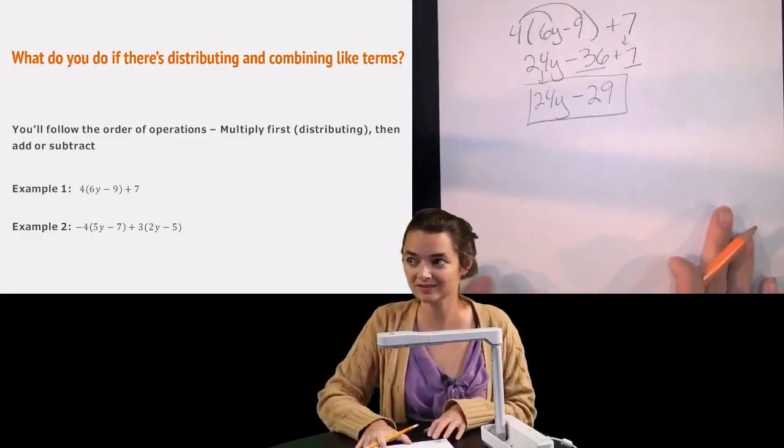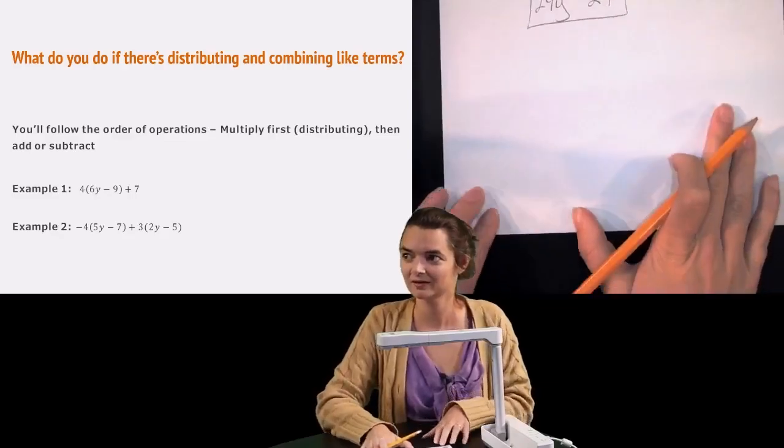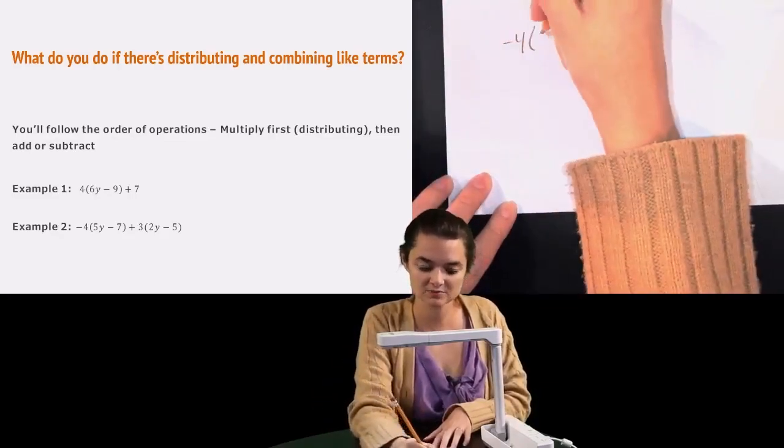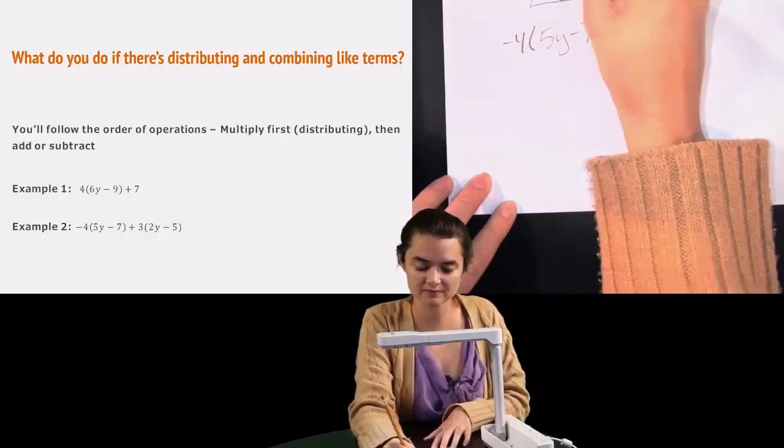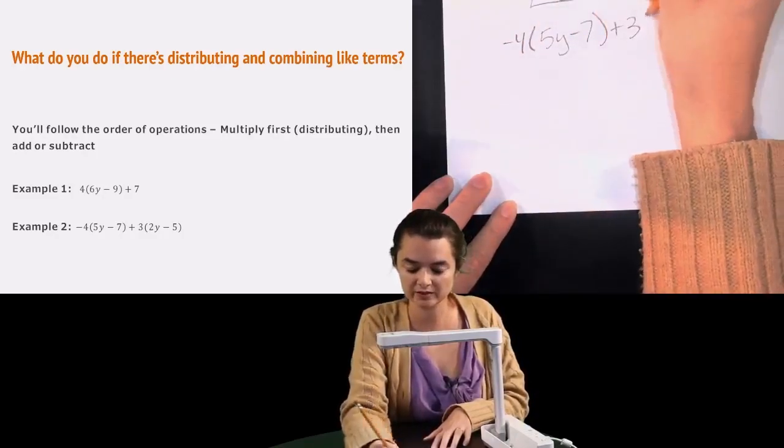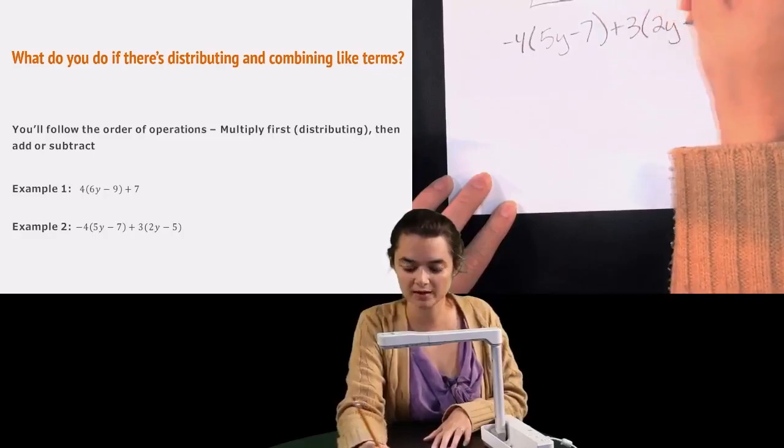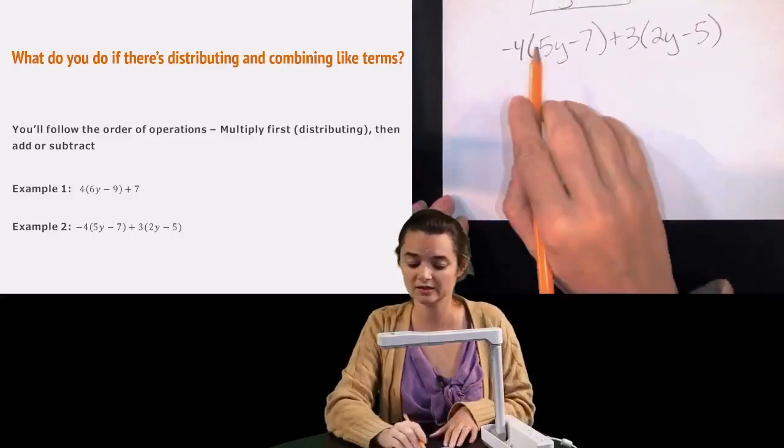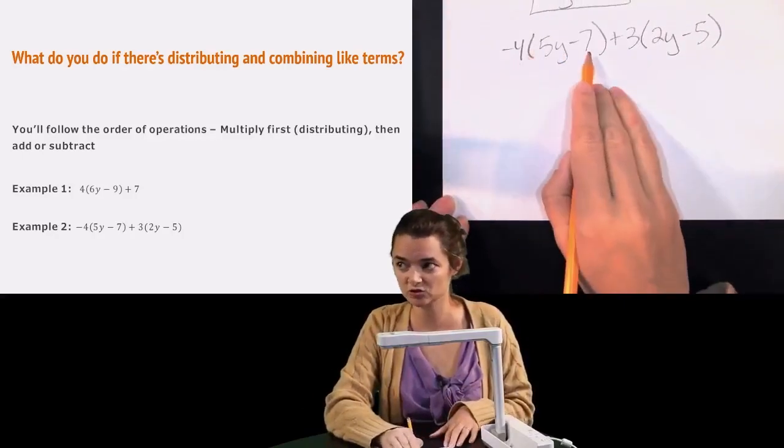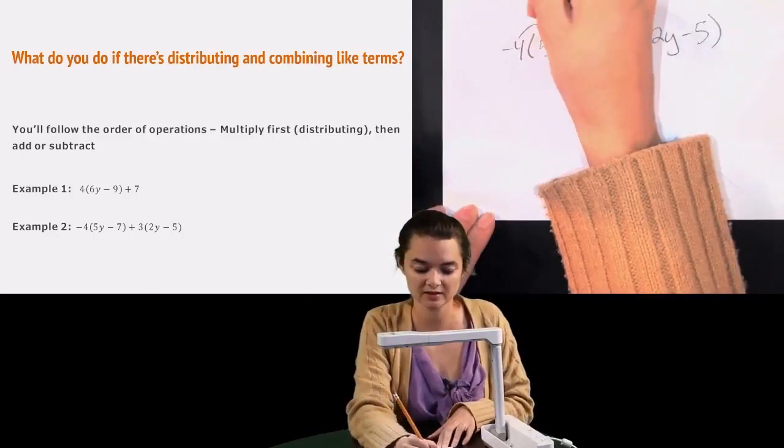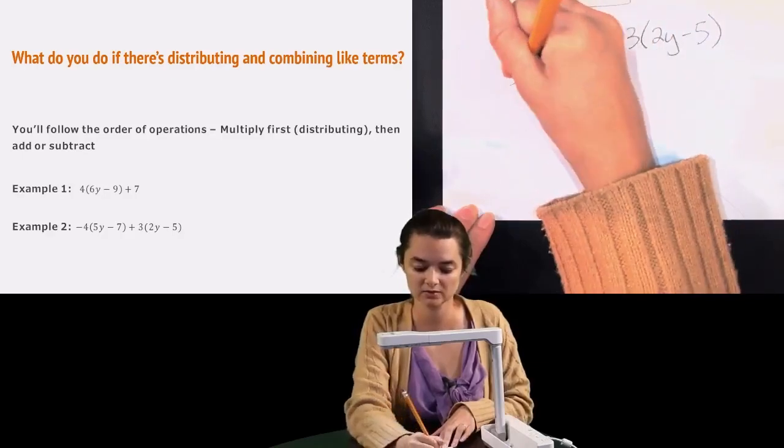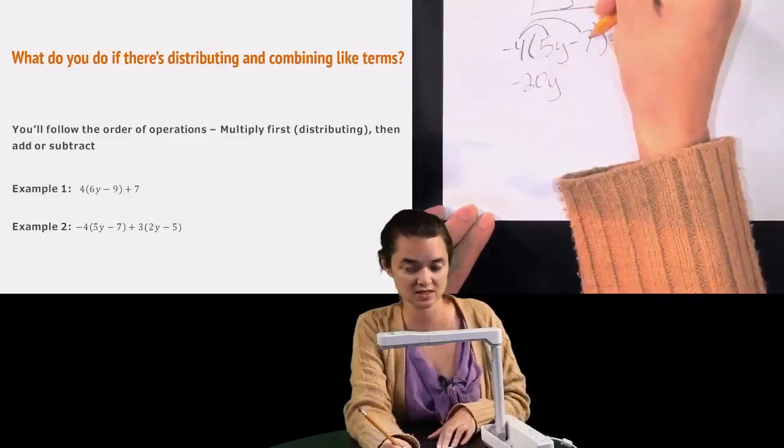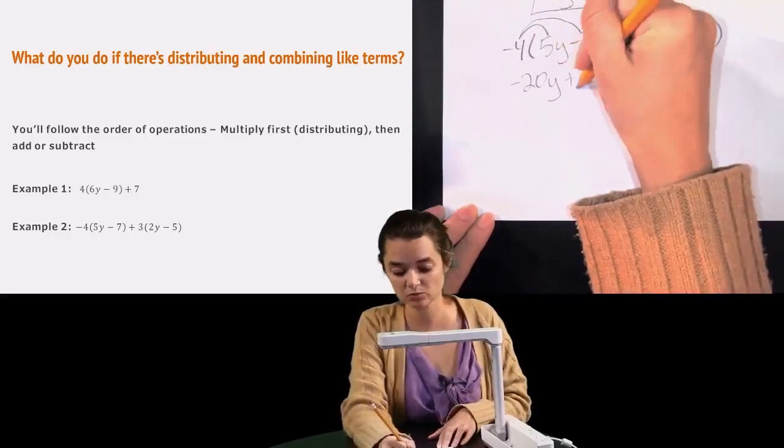The next one looks like a lot of fun because we have a lot going on. I have negative 4 times 5y minus 7 plus 3 times 2y minus 5. So what I'm going to do first is do all of my distributing. So the negative 4 distributes to the first parentheses. I'm going to have negative 4 times 5y, which would be negative 20y. And then I'm going to have negative 4 times negative 7, which would be a positive 28.